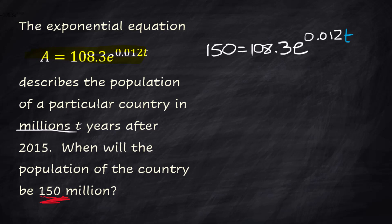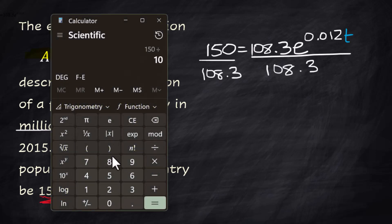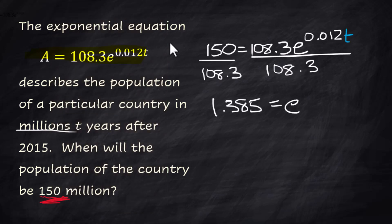Well this 108.3 is being multiplied times the e. You want to divide both sides by that. 150 divided by 108.3 equals 1.385 equals e to the 0.012t.